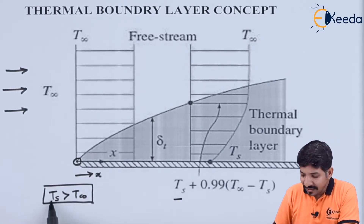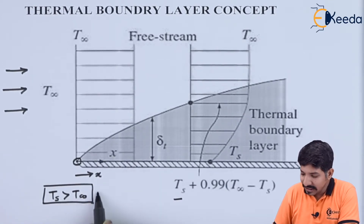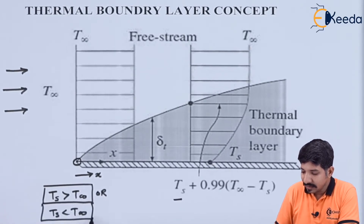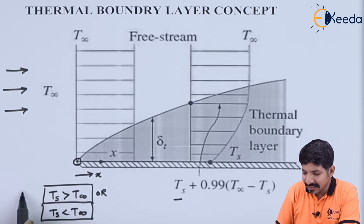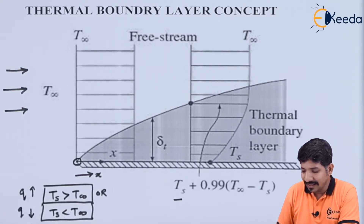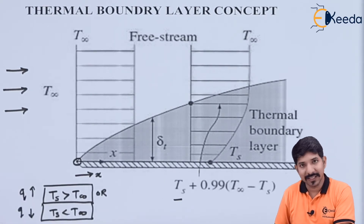The value of Ts can be greater than T infinity or Ts can be less than T infinity. If Ts is greater than T infinity, heat flow will travel in the upward direction; otherwise, the heat flow will travel in the downward direction.